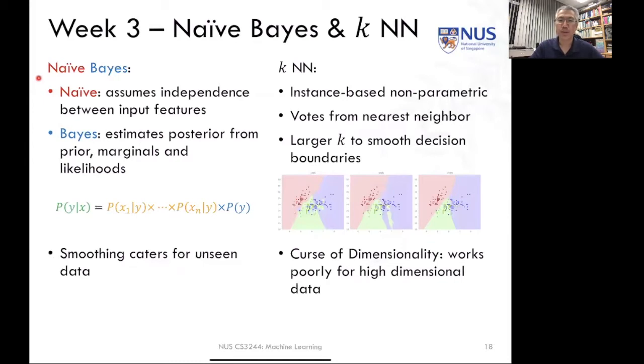So Naive Bayes is basically an algorithm that has two parts that are connoted by its name. Naive first means that we take an independence assumption between features, and that is represented by the data likelihoods. We're going to take all of the information about the inputs and factorize it into conditional independence assumptions for each individual attribute.